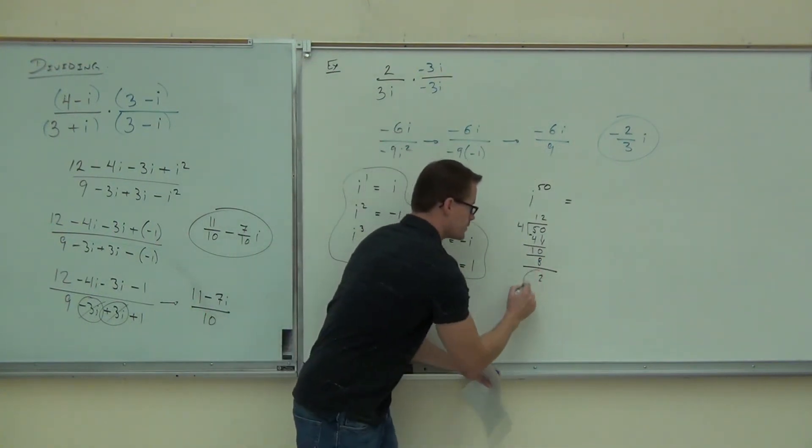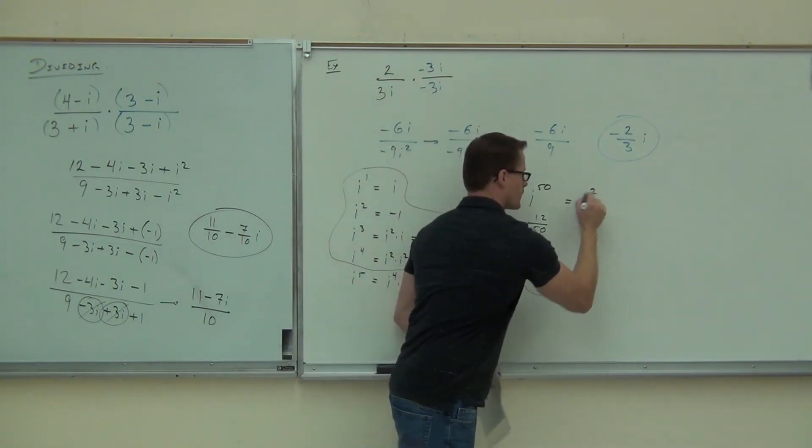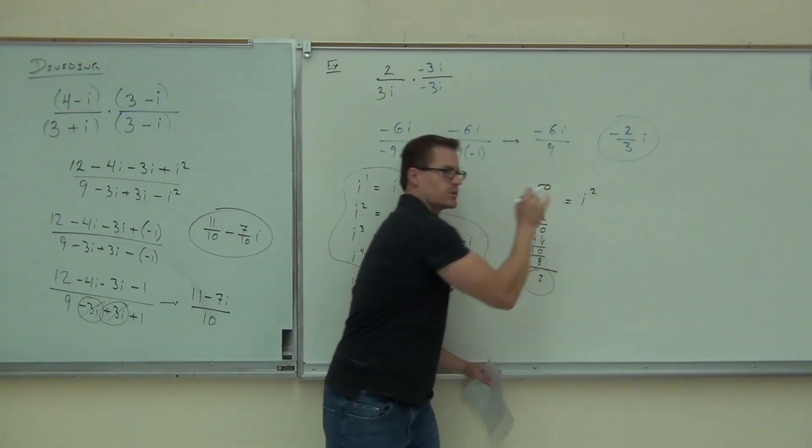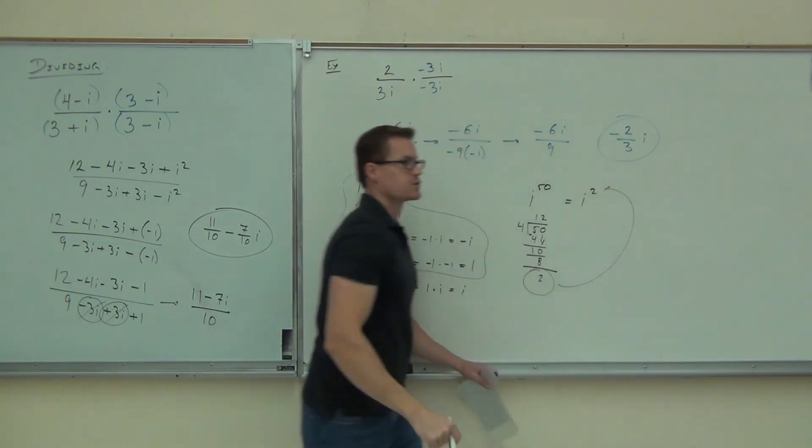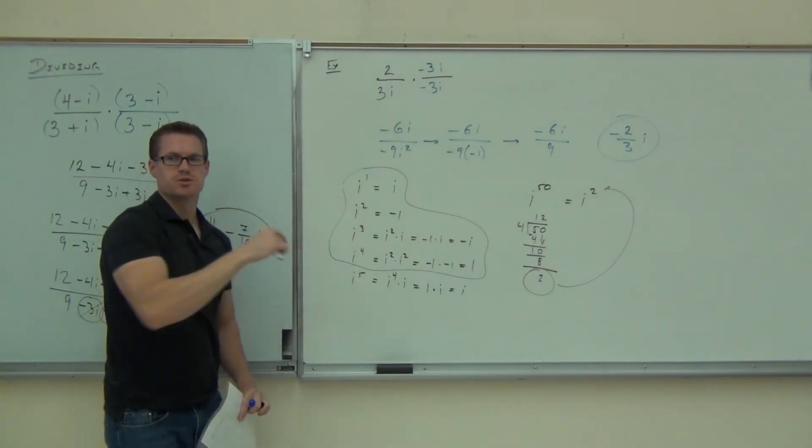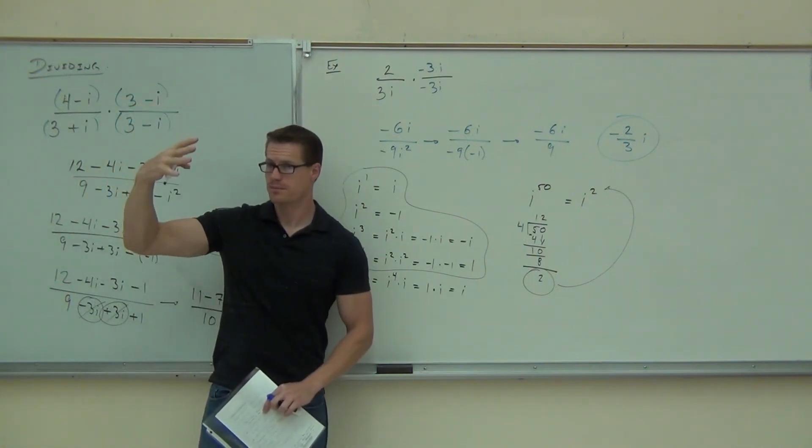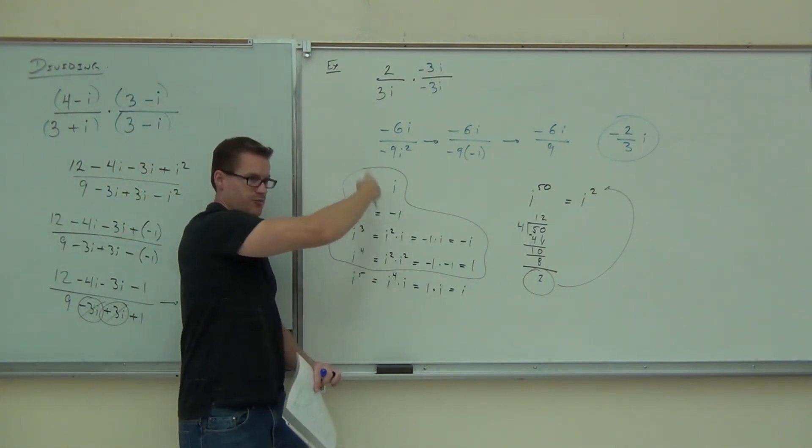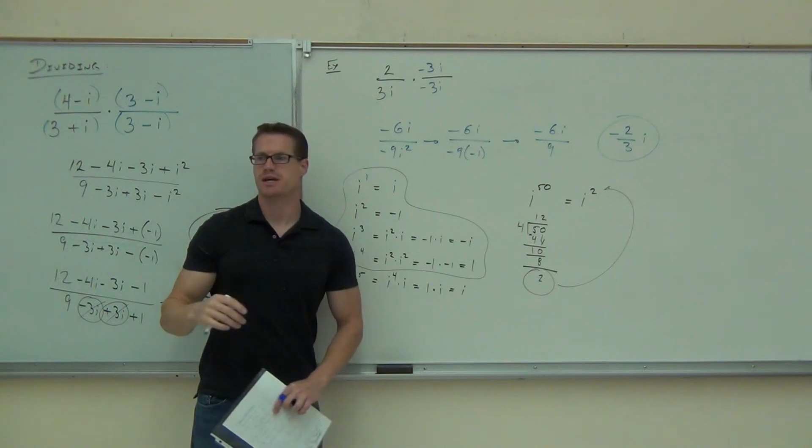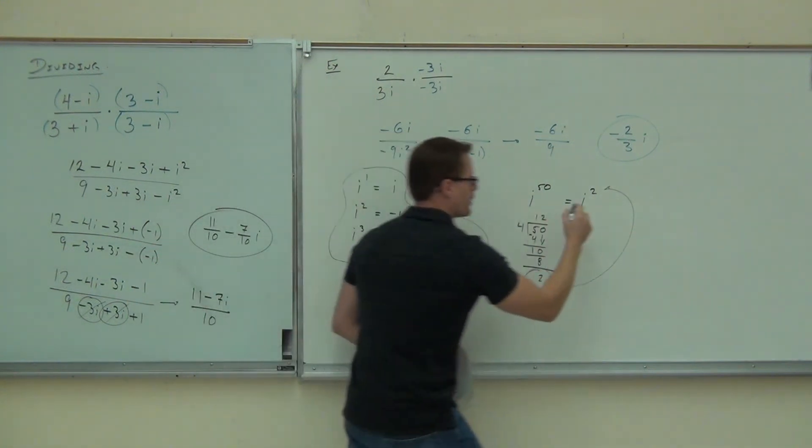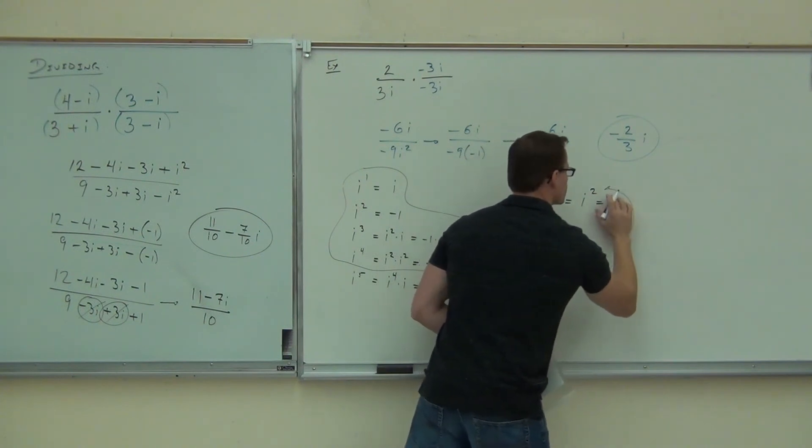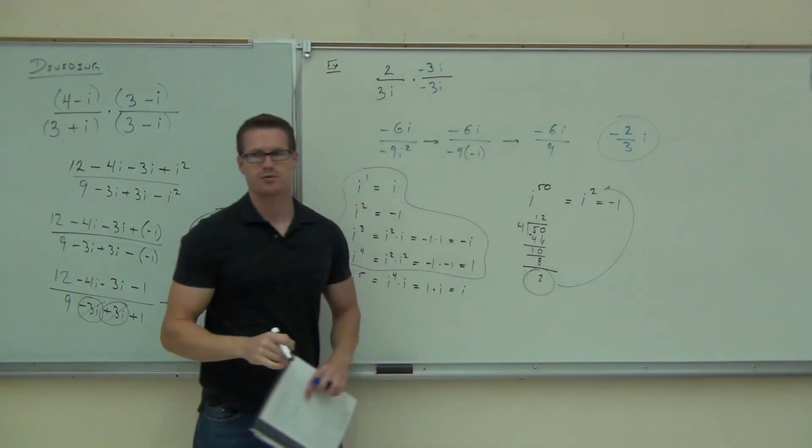This remainder says i to the fiftieth is equal to i squared. The remainder tells you where you're at. So you divide your power by four because you have four in your cycle. The remainder says I'm equal to i to that power. So you just look back at your table. I know i squared is negative one. Therefore, i to the fiftieth is equal to negative one.